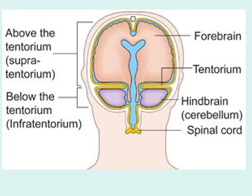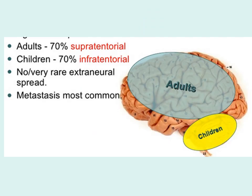As you know from your lecture, there are two types of tumors in the CNS: above the tentorium, which are called supratentorial, and below the tentorium, infratentorial. Adults more commonly have supratentorial tumors, while in children they involve the posterior fossa and are infratentorial. Extra-neural spread is rare, almost non-existent, but metastasis from other parts of the body to the brain is most common.